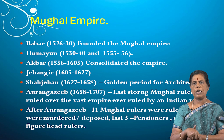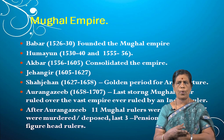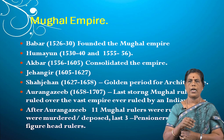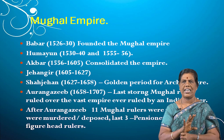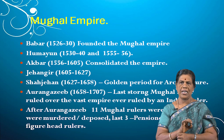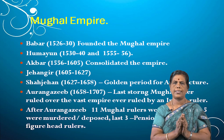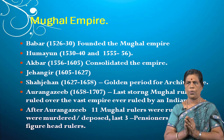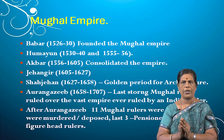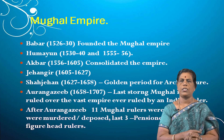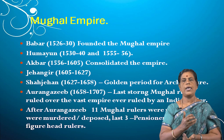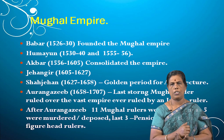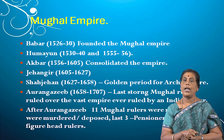The next ruler was Shah Jahan. He is a most important ruler in the Mughal dynasty because his period is considered the golden period of architecture. Shah Jahan constructed many buildings — the Red Fort and one of the wonders of the world, the Taj Mahal.